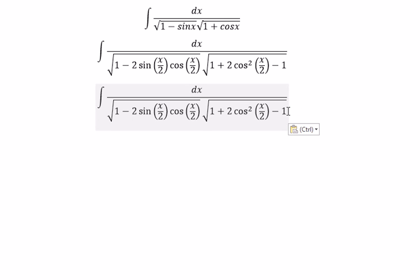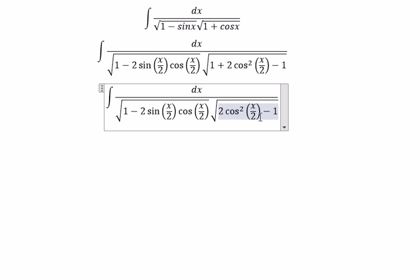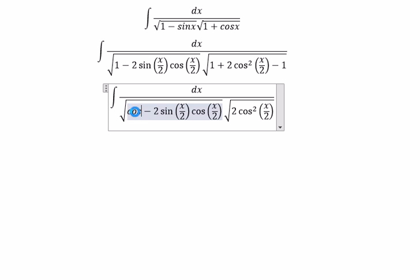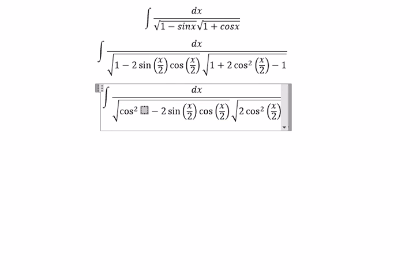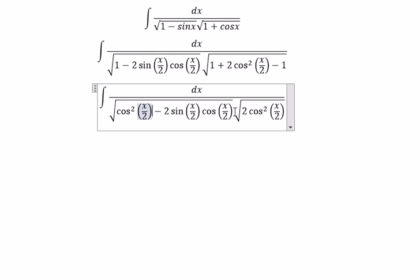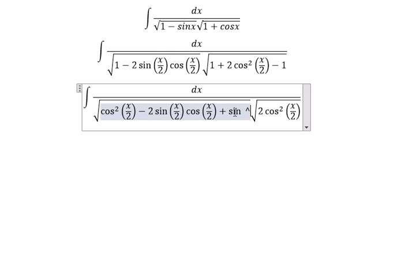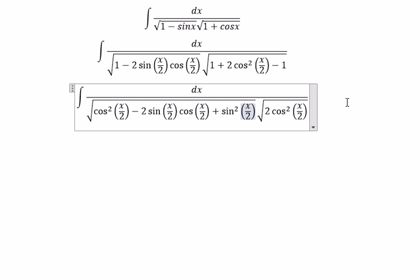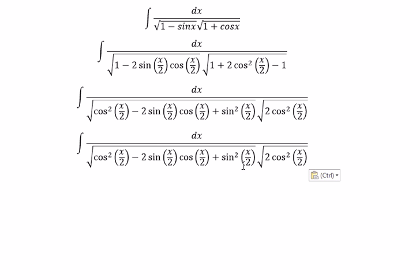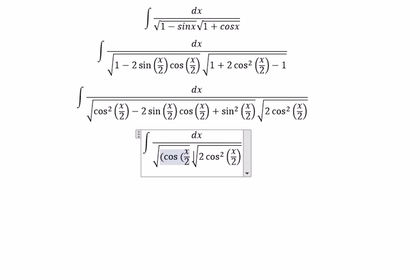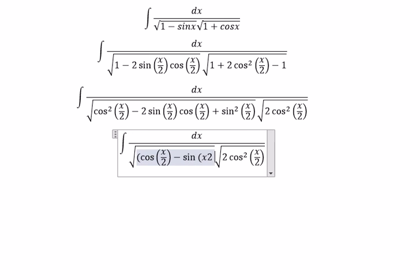So this term and this term will cancel. For the number 1, we substitute cosine squared(x/2) plus sine squared(x/2). So for this expression, we can write it as cosine(x/2) minus sine(x/2), all to the power of 2.